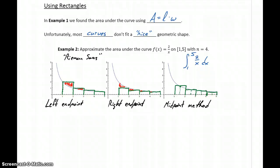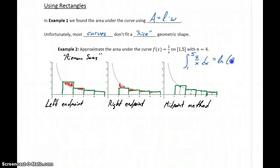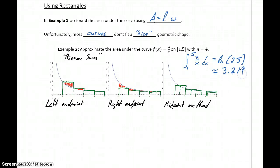Let's look at actually constructing and evaluating these approximations and compare them to the exact result. Our exact result should be the natural log of 25, which is approximately 3.219. In each of these cases, we're going to come up with numbers that are close to, but not quite equal to, that value.